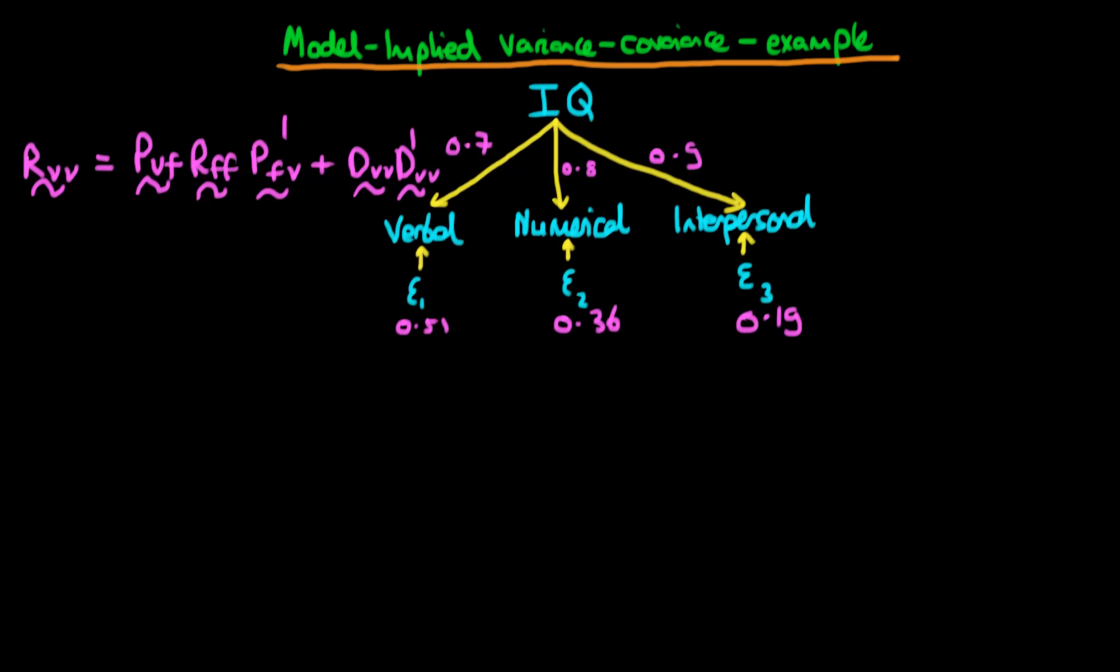In this video I want to provide an example as to how we can actually derive the model-implied variance and covariances between indicator variables using the matrix notation.